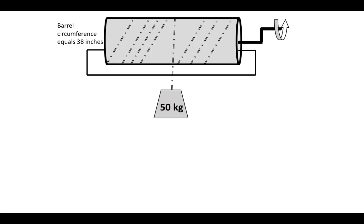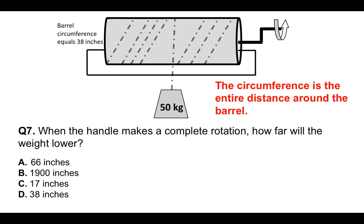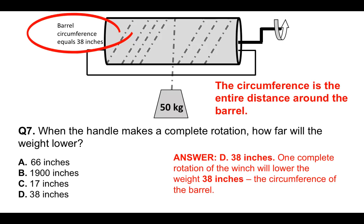Question number seven — again, a real common one. When the handle makes a complete rotation, how far will the weight lower? The barrel circumference equals 38 inches. Is it A — 66 inches, B — 1900 inches, C — 17 inches, or D — 38 inches? What we have to understand is what circumference means — it's the entire distance around the barrel. If the handle makes one complete rotation, the weight will lower simply 38 inches. So one complete rotation of the winch will lower the weight 38 inches. The correct answer is D.